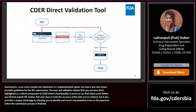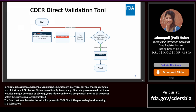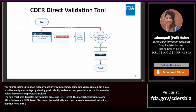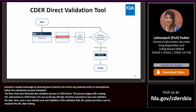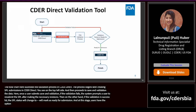The flowchart here illustrates the validation process in CDER Direct. The process begins with creating SPL submissions in CDER Direct, then proceeds to save and validate the data. If the validation fails, the system prompts the user to resubmit the SPL after making the necessary revisions. If the validation is successful, the SPL status will be marked as ready for submission, and users have the option to submit the SPL.